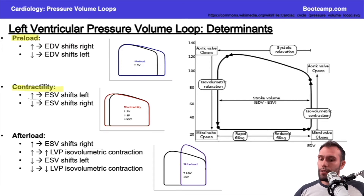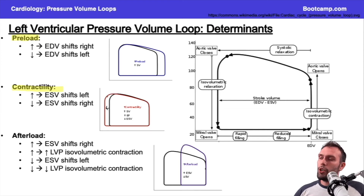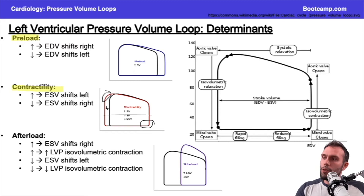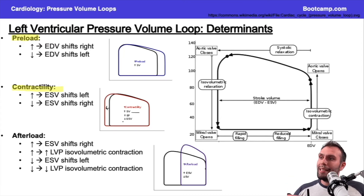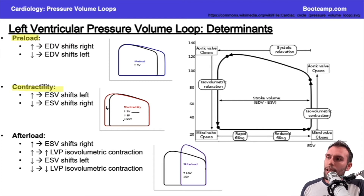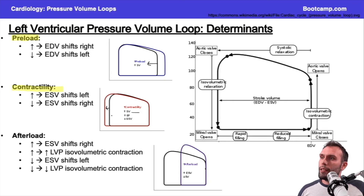What about contractility? Increases in contractility shift the curve to the left. As I increase contractility, I'm ejecting more blood from the heart, pushing the end-systolic volume further left. Stroke volume equals end-diastolic volume minus end-systolic volume, so decreasing the end-systolic volume increases the stroke volume. More blood is ejected, less is left behind. The reverse is true for lower contractility — that shifts the curve to the right.